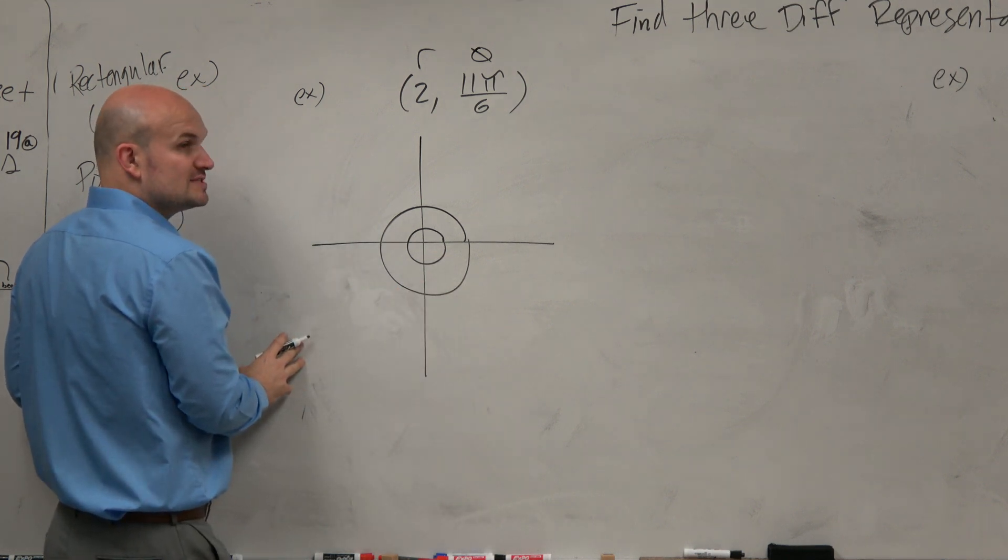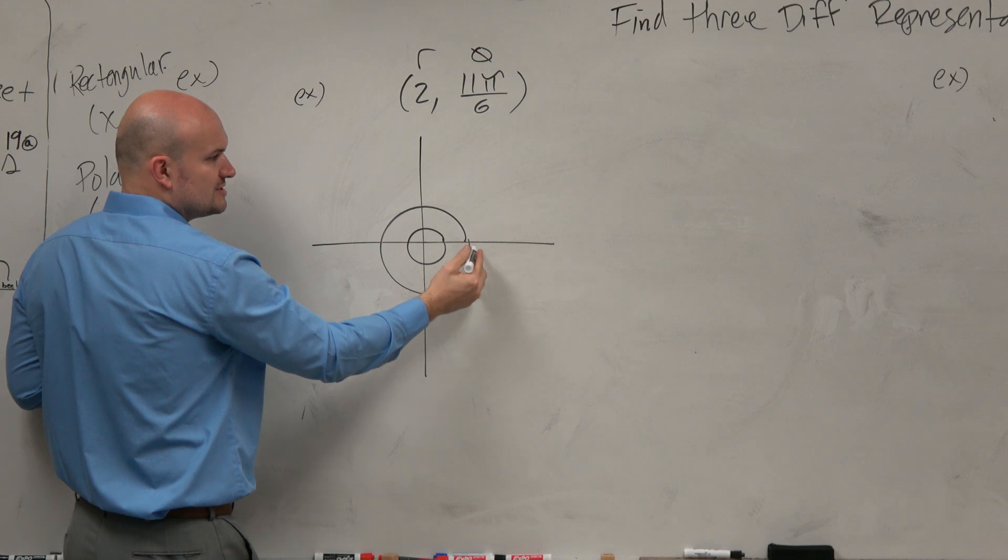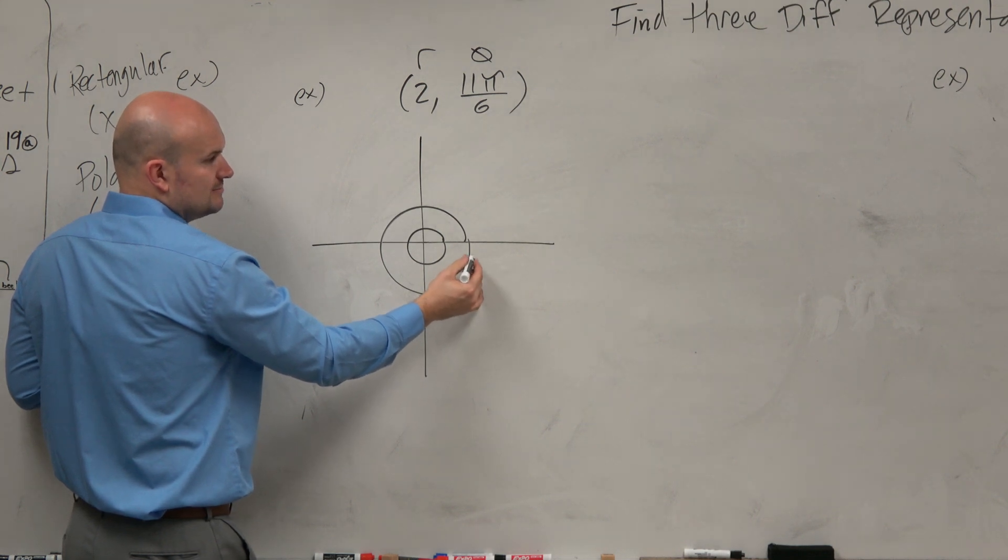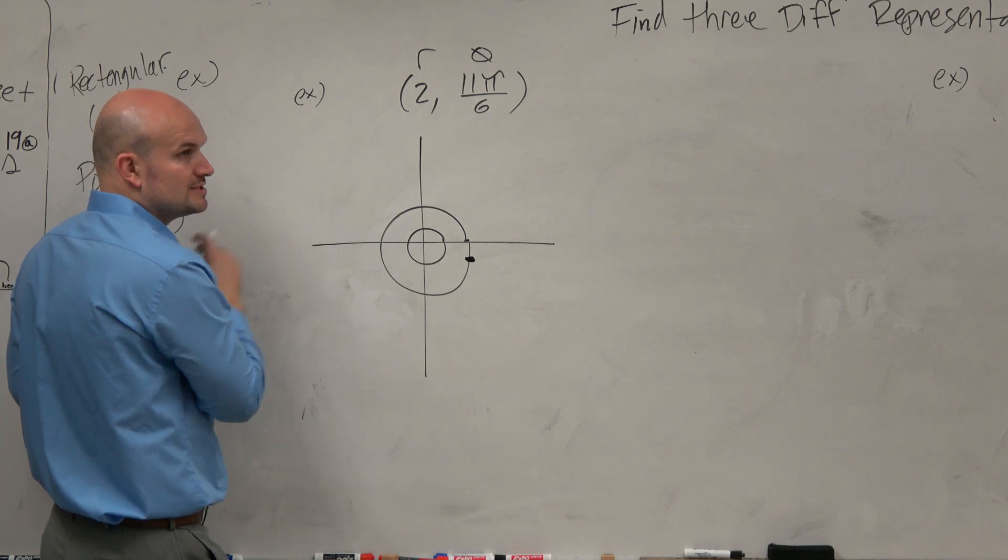We know 11π over 6. Hopefully, in starting the standard form, that's going to be in the fourth quadrant. It's going to be π over 6 away, right? So there would be our coordinate points. Did you have a question on this, Greg?